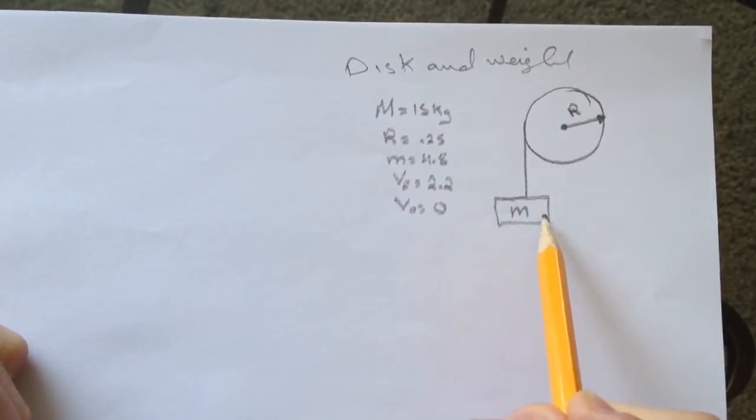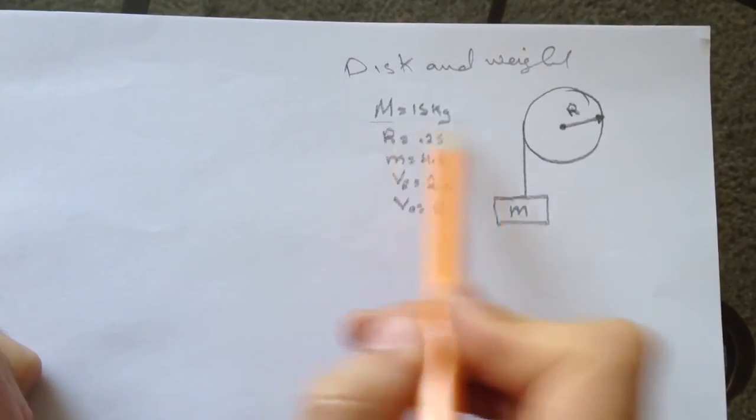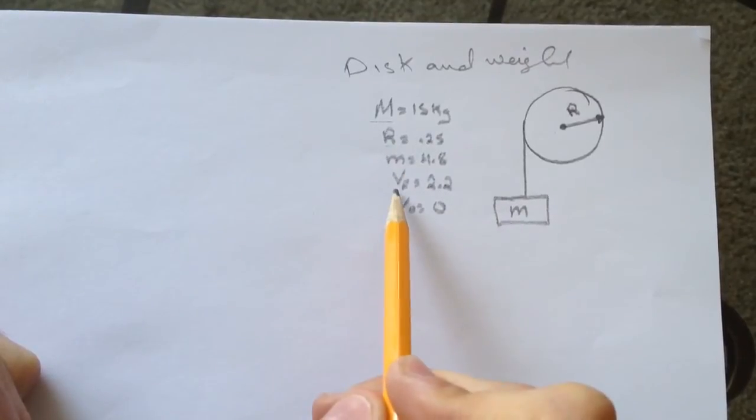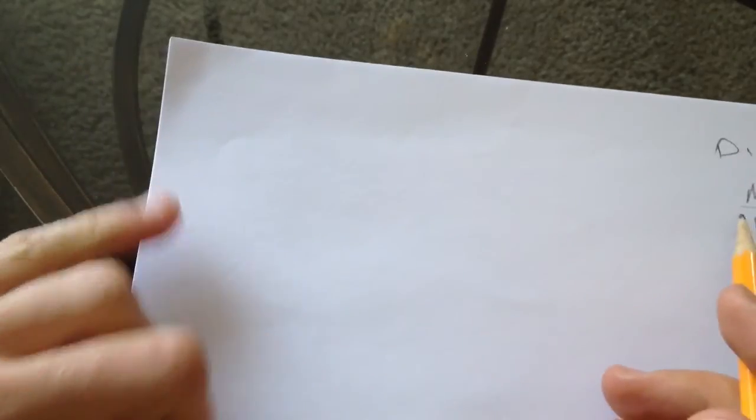We have a disc and weight, and we have the mass of the disc, the radius, the mass of the weight, and V final, which they can ask some questions about.